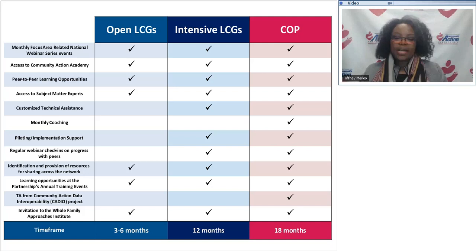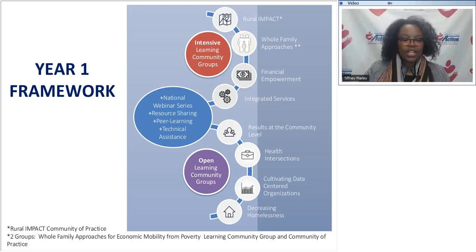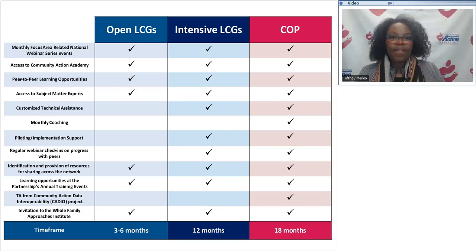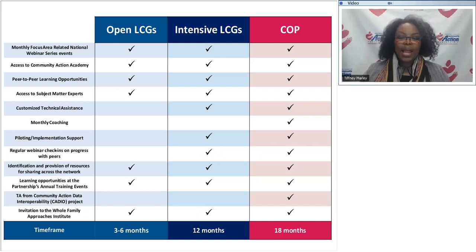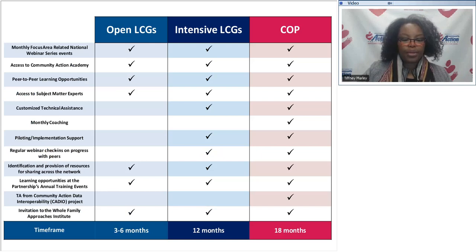The next level of engagement I'd like to highlight is our open learning community groups. Those groups include decreasing family homelessness, results at the community level, health intersections, and cultivating data-centered organizations. Open learning community group participants will have access to a mini-series webinars related to their topic area, optional affinity group meetings, access to the Community Action Academy, subject matter experts through affinity groups and webinar presentations, a wealth of resources from various presentations, and opportunities at the partnership annual convention and an invitation to participate in the whole family approaches institute.